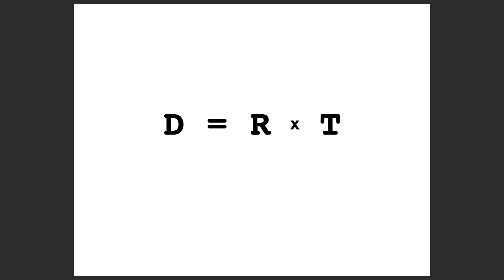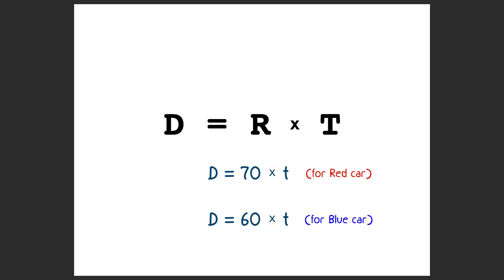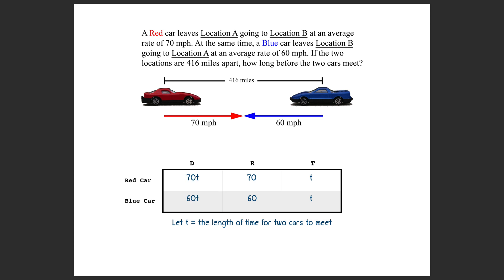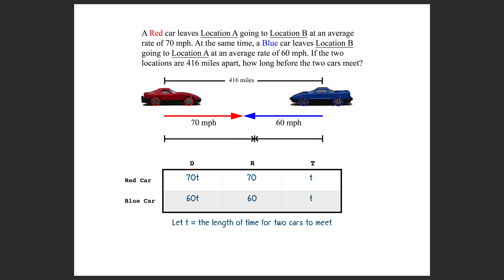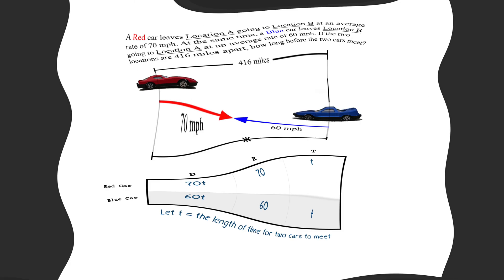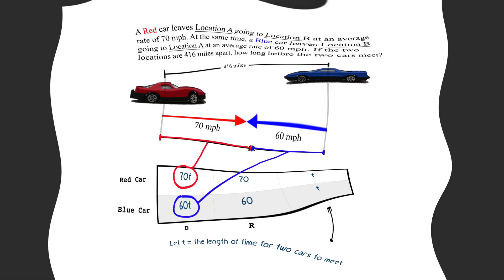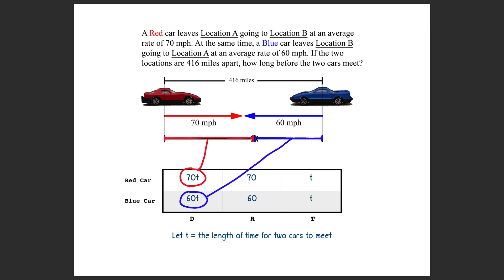Here's what we need to use: distance equals rate times time. With direct substitution, 70 times t for the red car and 60 times t for the blue car gives us the two distances we can fill in the table. Since they travel certain distances before they meet, being 416 miles apart, try to imagine painting the tires with never-dry, never-run-out-of-paint red and blue. They would paint the road with certain distances. Before they meet, the red car would paint a longer distance than the blue car because it travels faster.